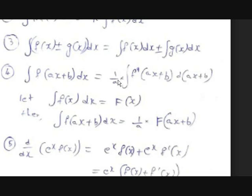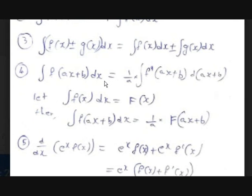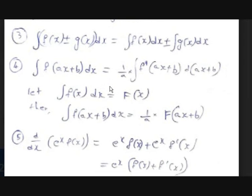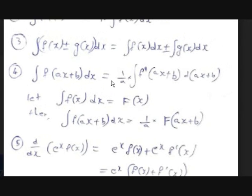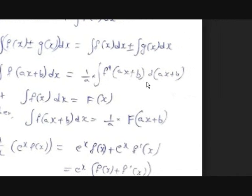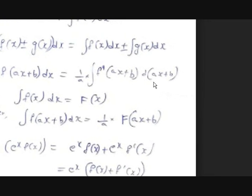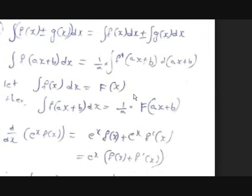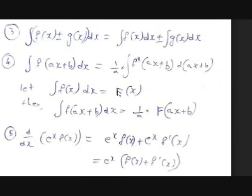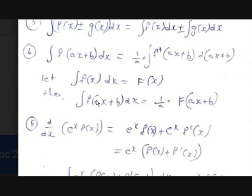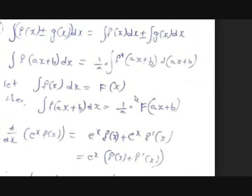The integral of a linear function — instead of just x, the integral of f(ax + b) dx — is nothing but the reciprocal of the coefficient of x. Here the coefficient of x is a, so you get (1/a) · ∫f(ax + b) d(ax + b). If you replace ax + b by t, you get (1/a) · ∫f(t) dt and can integrate normally. So if ∫f(x) dx = F(x), then ∫f(ax + b) dx = (1/a) · F(ax + b).